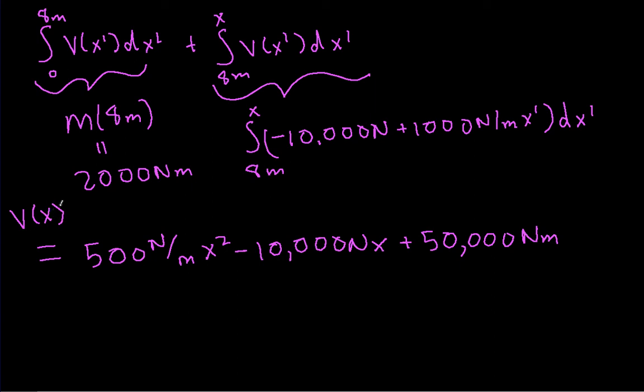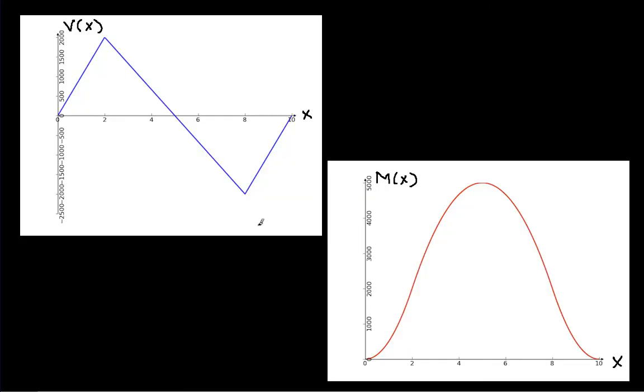I guess we should plot this and see what it tells us. So I have plotted this. Here we have v(x) and here we have the corresponding function that we just found M(x). And you can see that M(x) is made up of pieces of parabolas in the same way that v(x) is made up of pieces of straight lines.